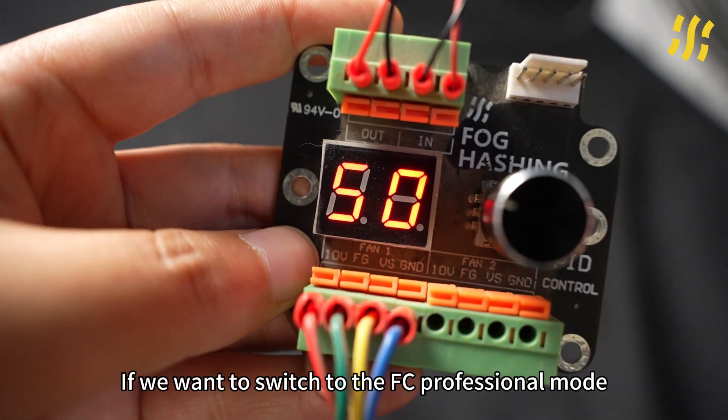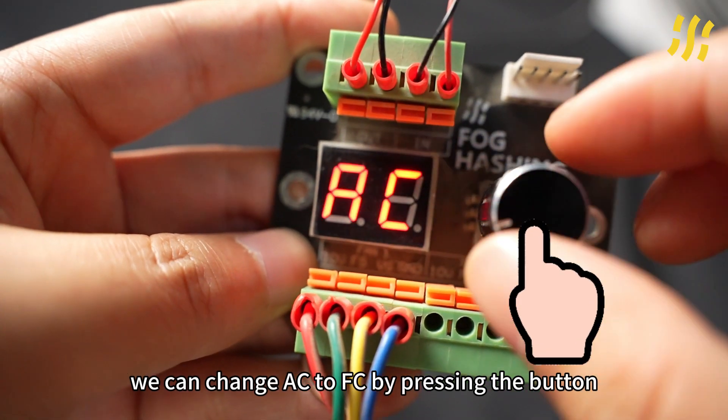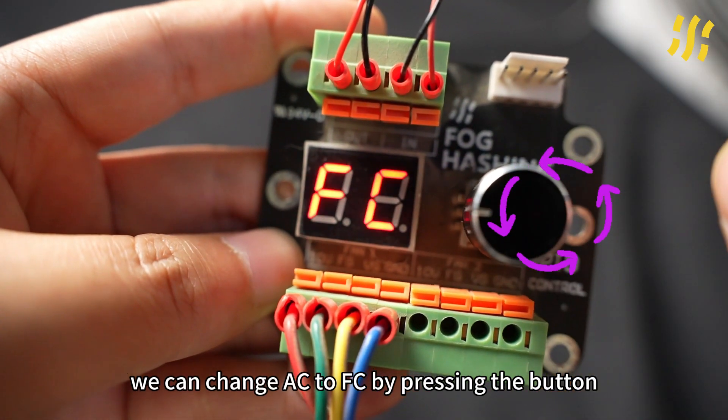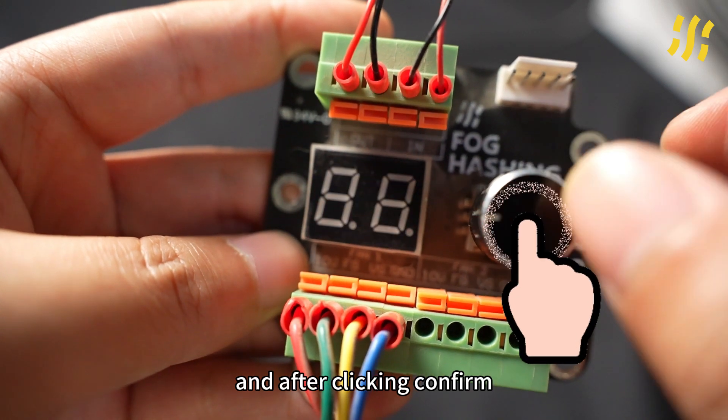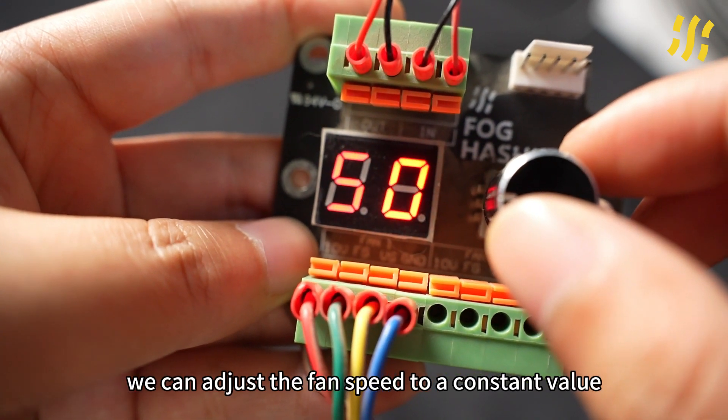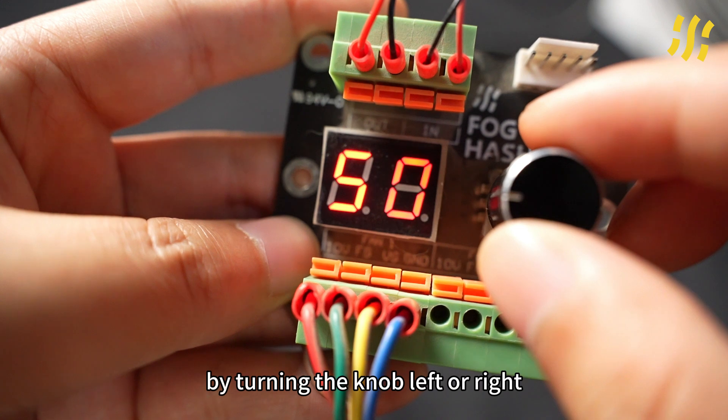If we want to switch to FC professional mode, we can change AC to FC by pressing the button and clicking confirm. We can adjust the fan speed to a constant value by turning the knob left or right.